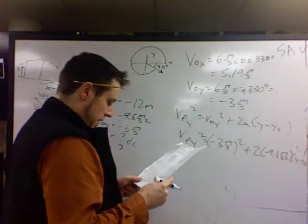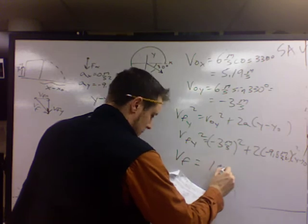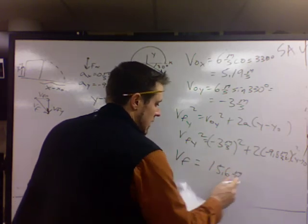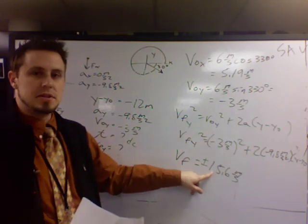Plus 2 times negative 9.8 times y minus y naught. When you solve that, you should get v final of 15.6 meters per second.